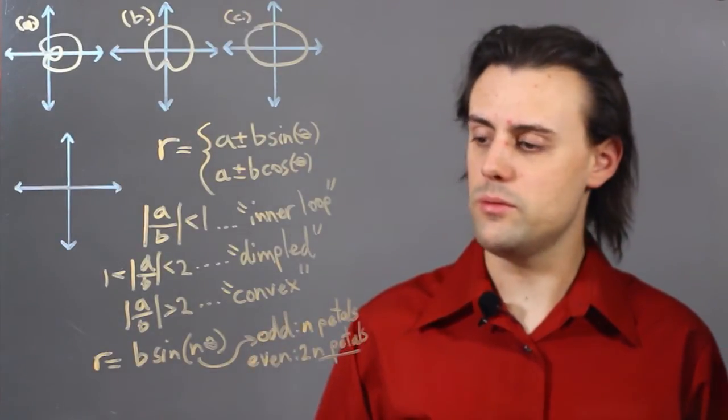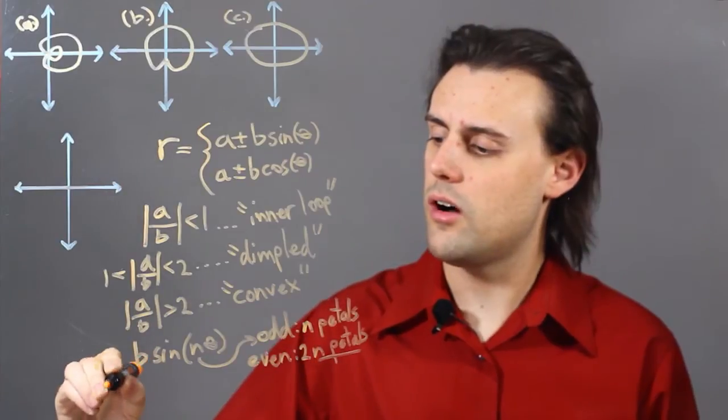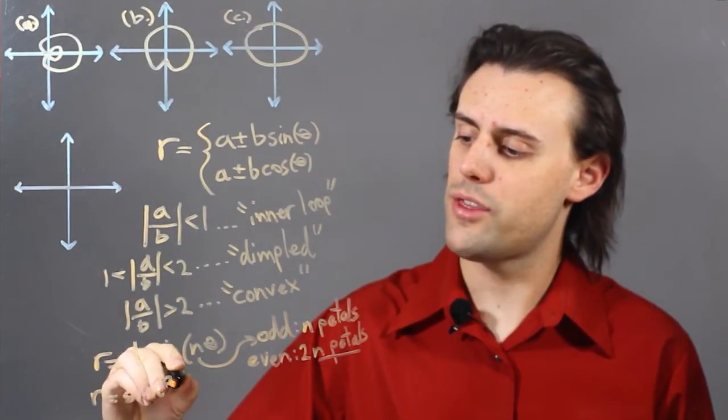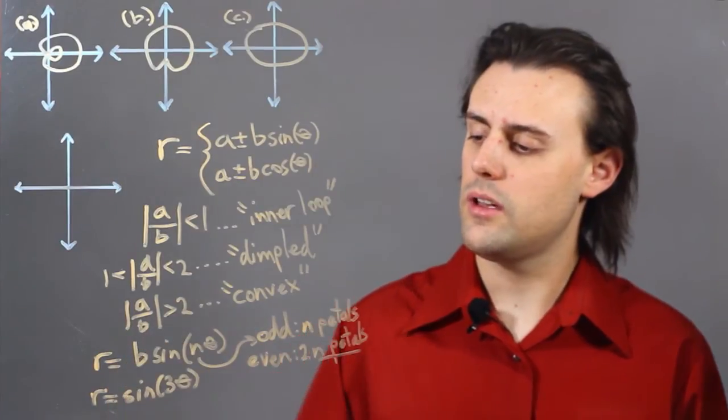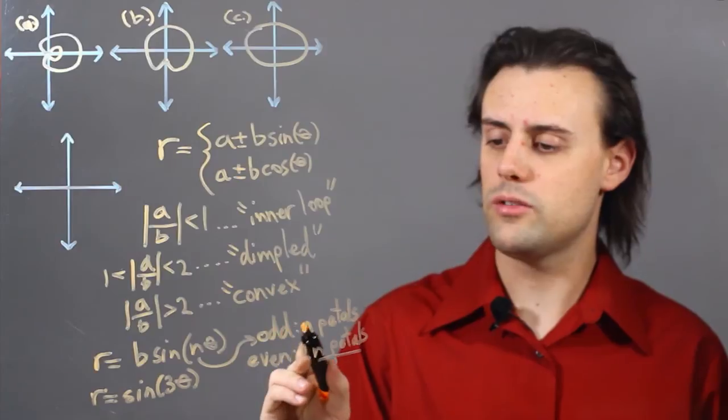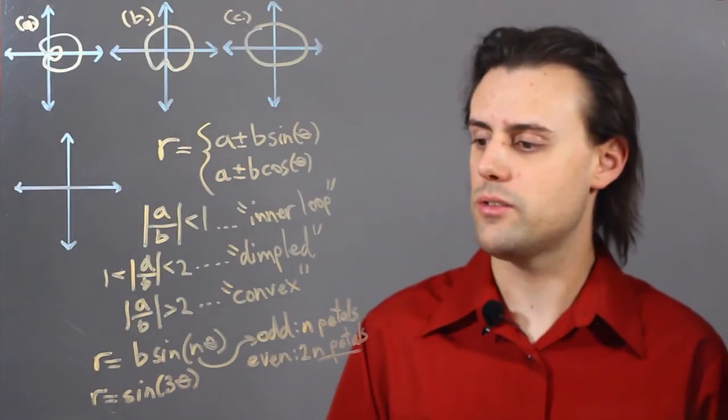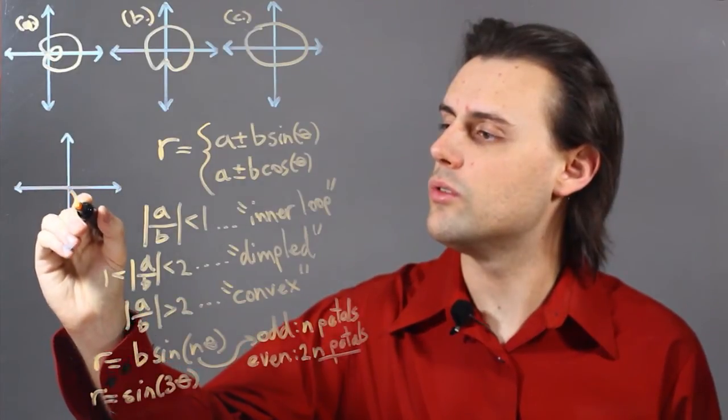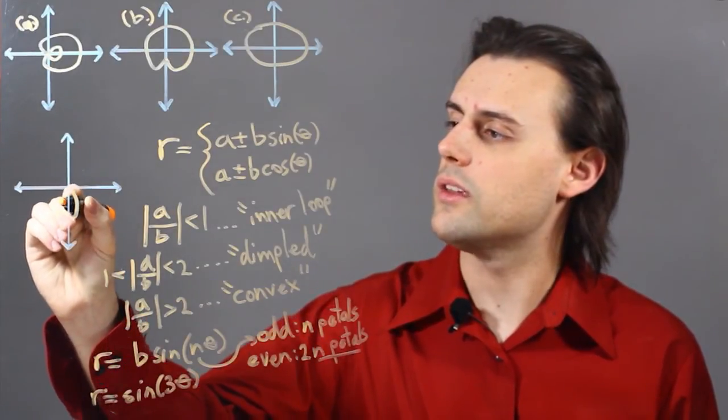So as an example, we can consider r equals sine of 3 theta, where we notice that n is equal to 3, so it's odd, so there's going to be 3 petals. And in this case, our Limasson is going to look something like this.